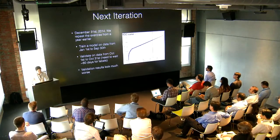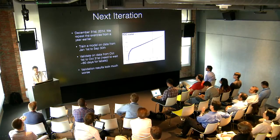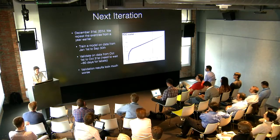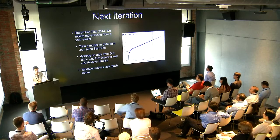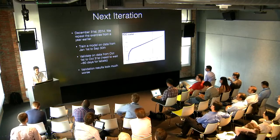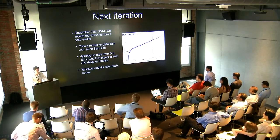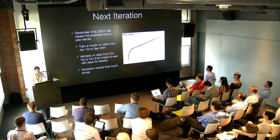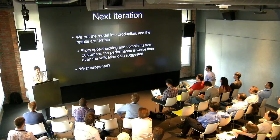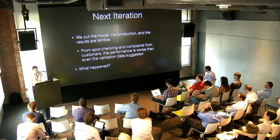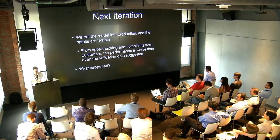Let's say it's December 31st, 2014, and we decide it's time to retrain the model. We train on data from January 1st to September 30th, 2014, evaluate on October data, and the ROC curve looks worse than before. We put it into production and the results are terrible — way more chargebacks than expected, even worse than cross-validation suggested. What happened? We were already blocking charges in production, so we're training only on charges we observed the outcome for — the residual charges not blocked by the previous model.